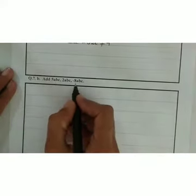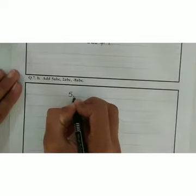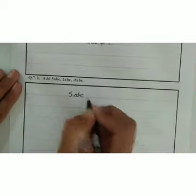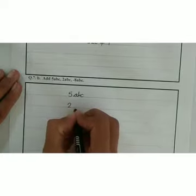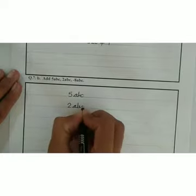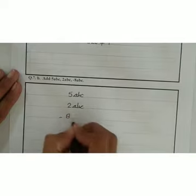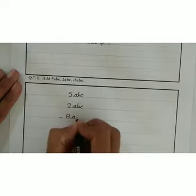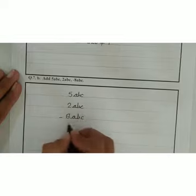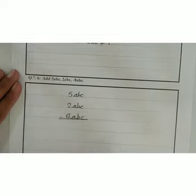Students, next we have question number 7: add 5abc, 2abc, and minus 8abc. Students, let us start. We have to add 5abc, 2abc, and minus 8abc. First we add the positive terms.